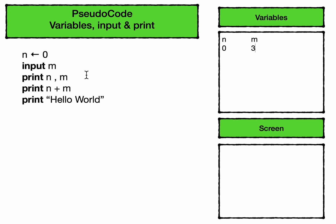After these two lines the variables n and m have the values zero and three. The next line is print, which will print two numbers on the screen depending on what n and m are, so we'll end up with zero and three on the screen. The next line says print n plus m, so n and m are added together — in this case zero and three — and we get the answer three.